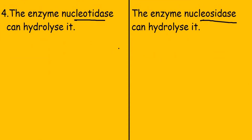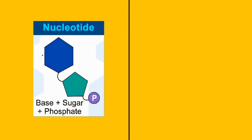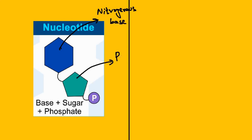Now here is a structural representation of a nucleotide. This is the nitrogenous base, this is the pentose sugar, and this is the phosphate group.